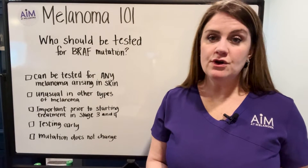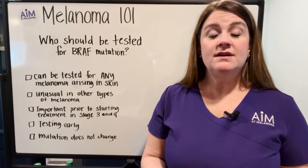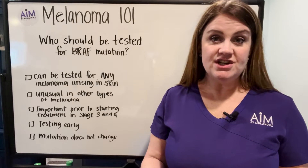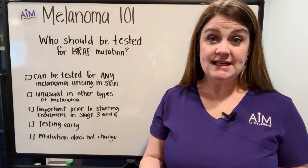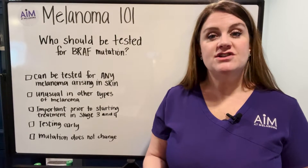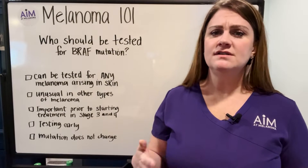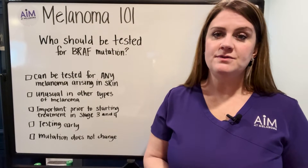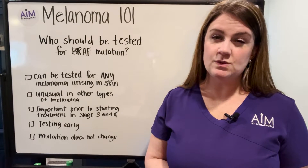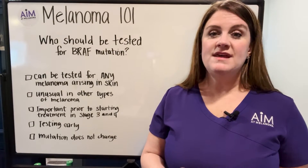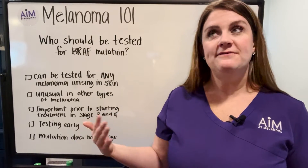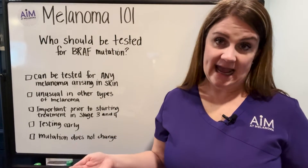As you know from our prior video, the most common BRAF mutation is V600E. But you can also have mutations in V600K. And then there are a couple of other mutations that we sometimes see in melanoma as well that really aren't as active as the BRAF V600E and K.